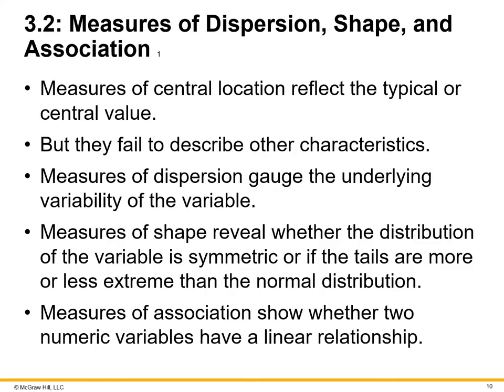Next, let's look at measures of dispersion, shape, and association. Measures of central location reflect the typical or central value but fail to describe other characteristics. They give you a straightforward data point — an average, a most frequent mode, or a 50th percentile median — but don't provide additional insight over time. Measures of dispersion gauge the underlying variability; measures of shape reveal whether the distribution is symmetric or if tails are more extreme than the normal distribution; and measures of association show whether two numeric variables have a linear relationship or correlation.